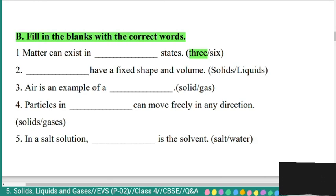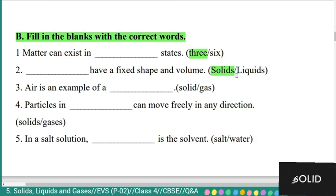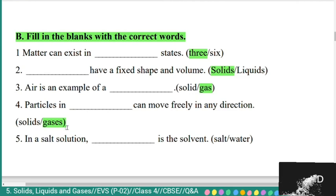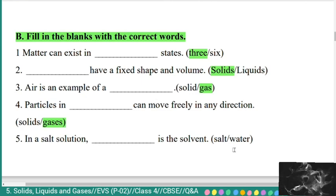Fill in the blanks. First: matter can exist in three states — solid, liquid, and gases. Second: solids have a fixed shape and volume. Third: air is an example of a gas. Fourth: particles in gases can move freely in any direction. Fifth: in a salt solution, water is the solvent.